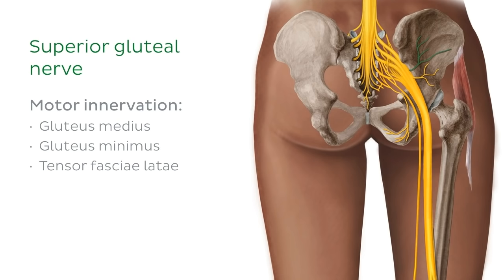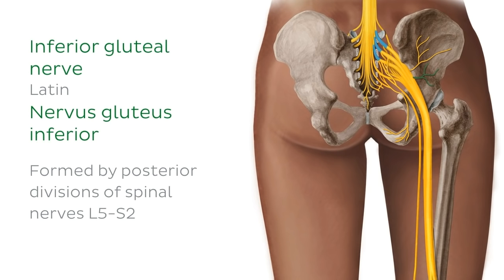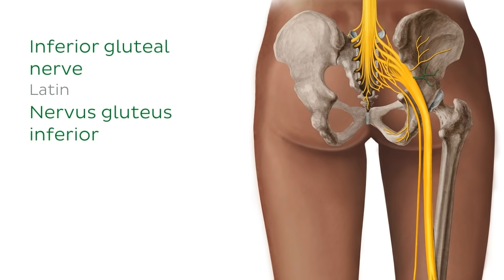The superior gluteal nerve provides motor innervation to the gluteus medius, the gluteus minimus, and the tensor fasciae latae muscle. The inferior gluteal nerve is formed by the posterior divisions of spinal nerves L5 to S2 and, like its superior sibling, leaves the pelvis via the greater sciatic foramen. However, like the sciatic nerve, the inferior gluteal nerve emerges below the piriformis muscle.